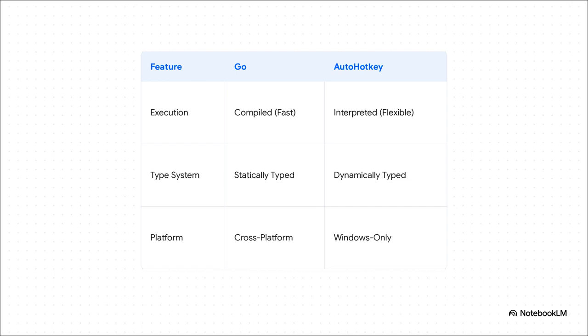We just talked about the type system — strict versus chill. And finally, platform: Go is built to be a world traveler, running on anything. AutoHotKey is a homebody — it's a Windows-only specialist, and proud of it.